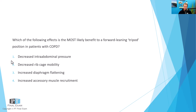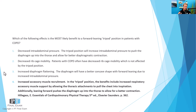So we've got 1. Decreased intra-abdominal pressure. 2. Decreased ribcage mobility. 3. Increased diaphragm flattening. And 4. Increased accessory muscle recruitment. The question is asking which of these effects is the most likely benefit to a forward-leaning tripod position in patients with COPD. The crux of this question is really just whether or not you understand the tripod position. This is a classic position taken by patients with COPD, and it increases intra-abdominal pressure, pushing the diaphragm up into the thorax so that as you contract the diaphragm it can descend a little bit better with gravity assist.